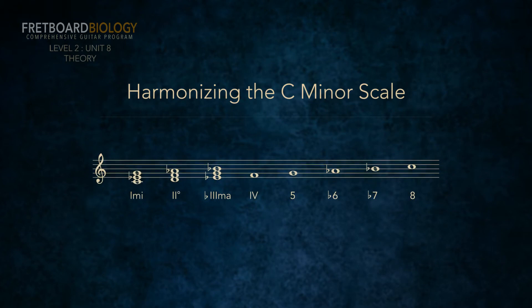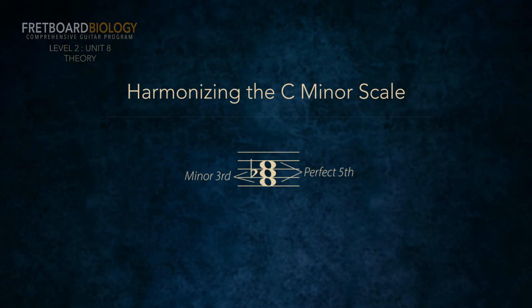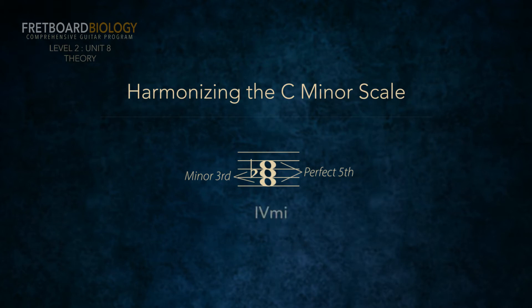Let's do the four chord. We start with the fourth scale degree, which is F. We find a note a third above F, from the C minor scale. That note is an A flat, and we call this the third of the triad. Next, we find a note a fifth above F, also from the C minor scale. This note is a C, and we call this the fifth of the triad. A flat is a minor third above F, and C is a perfect fifth above F. We know that is a minor triad. Conclusion: the four chord is minor in all minor keys, and we label it four MI.